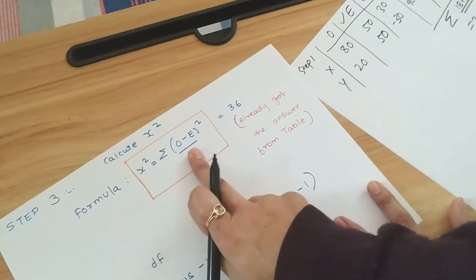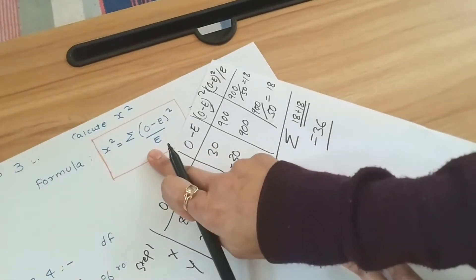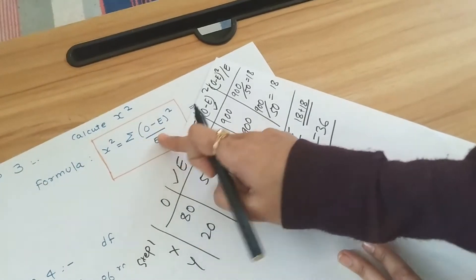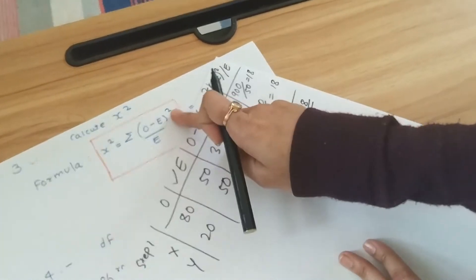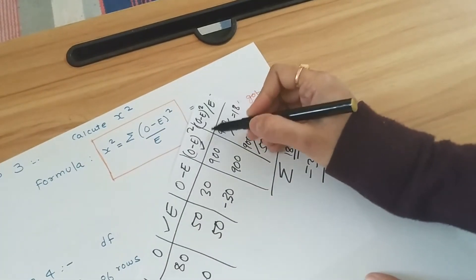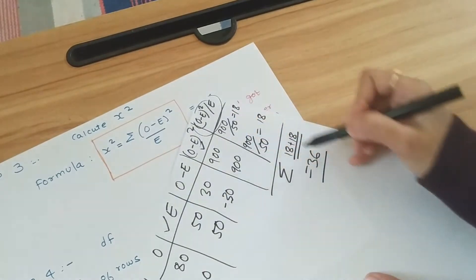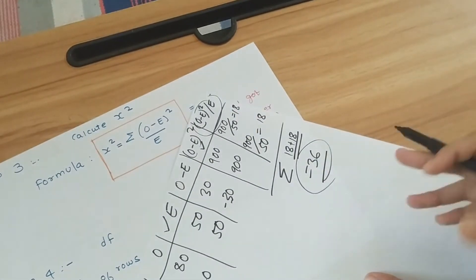You can see this is the formula. We have directly got the answer from the table itself. This is summation of O minus E squared divided by E. That is the sum of this value, that is 36. We don't have to apply any formula separately.